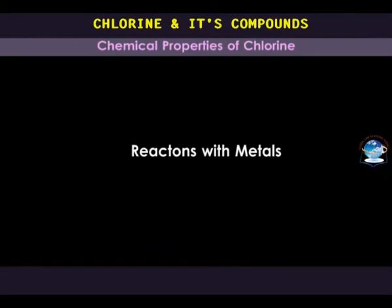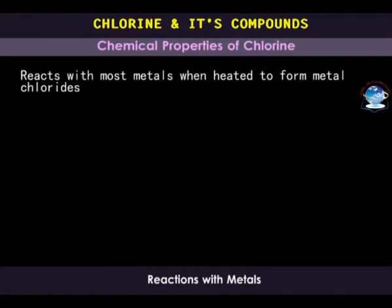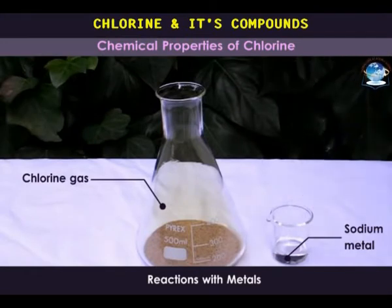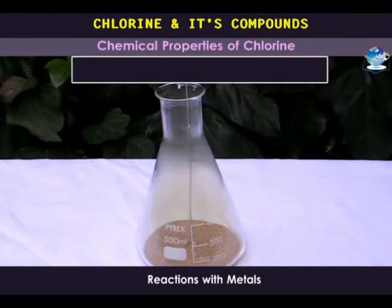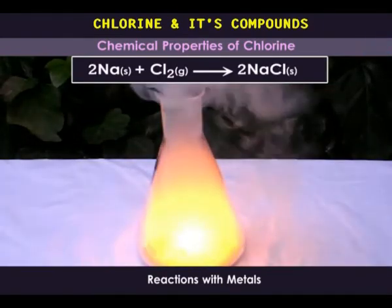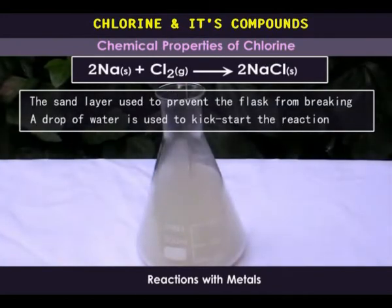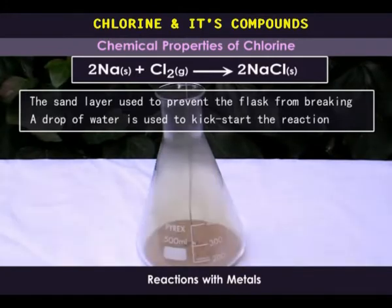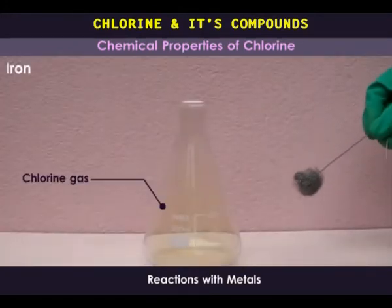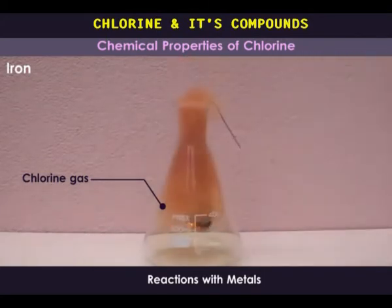Reaction with metals. Chlorine reacts with most metals when heated to form metal chlorides. A heated sodium explodes into red-brown fumes in a flask containing chlorine to form sodium chloride. When heated magnesium is used, magnesium chloride is formed. When heated iron wool is inserted in a jar containing chlorine, it burns with brown fumes to form iron-3 chloride.